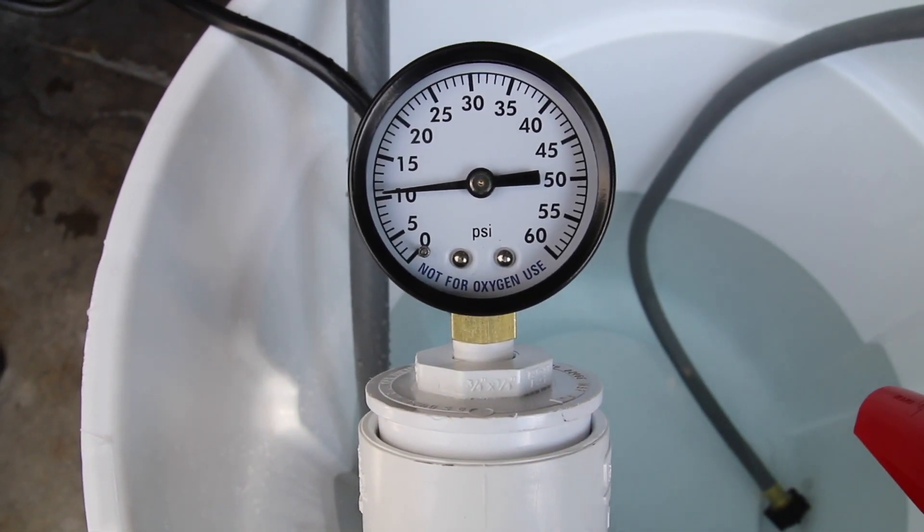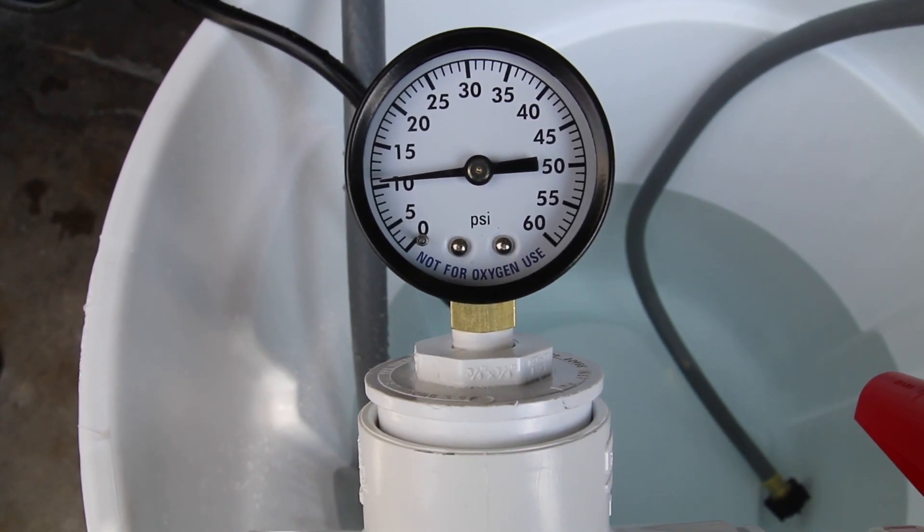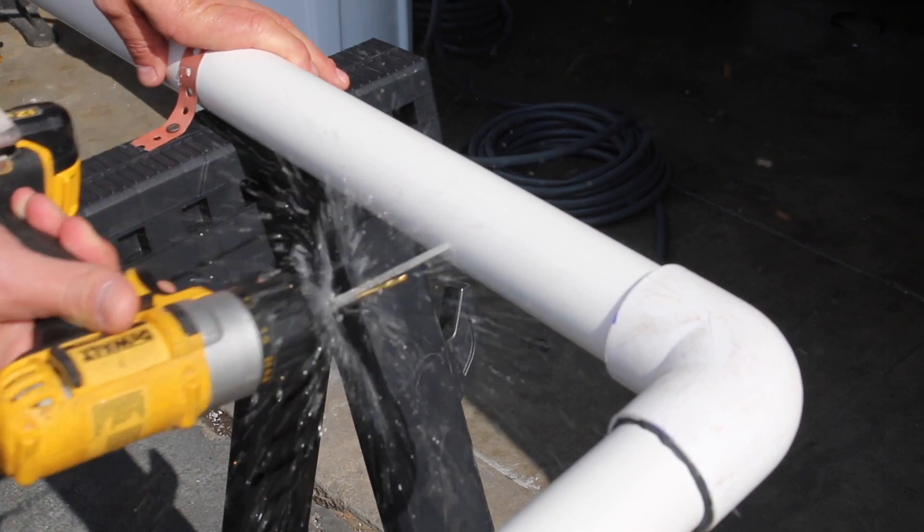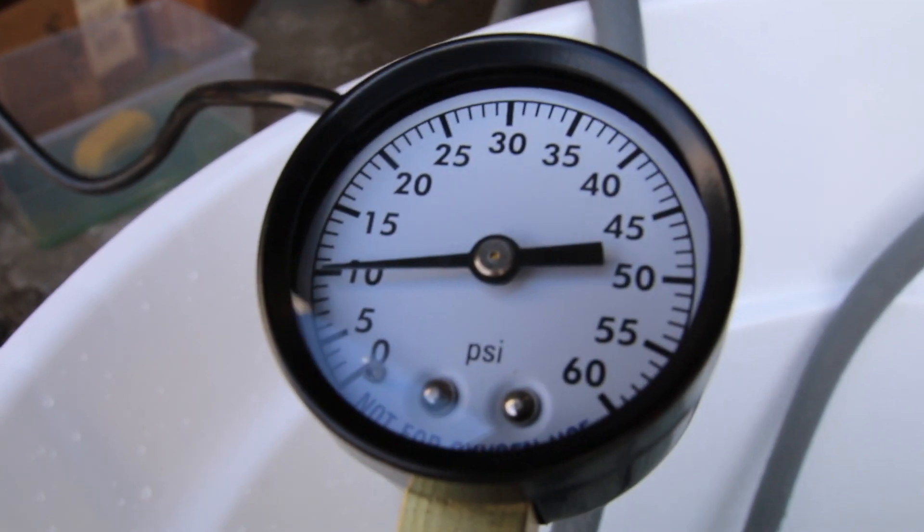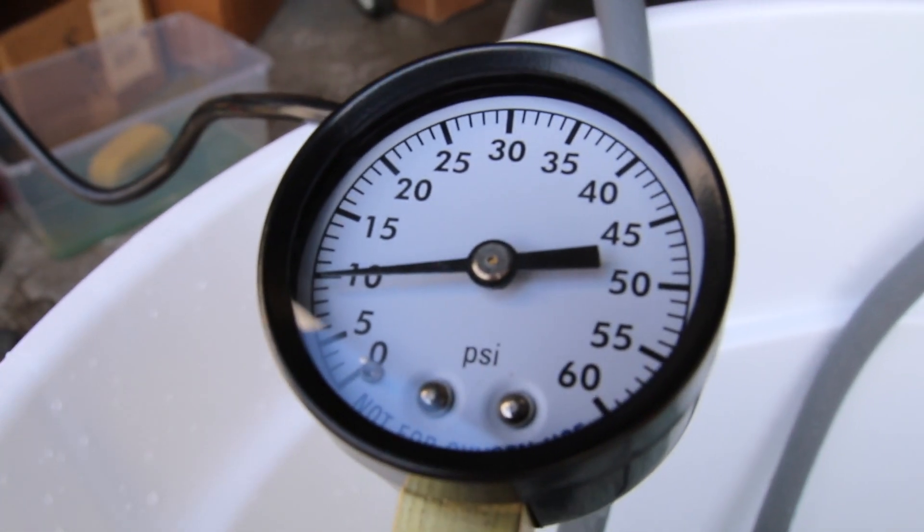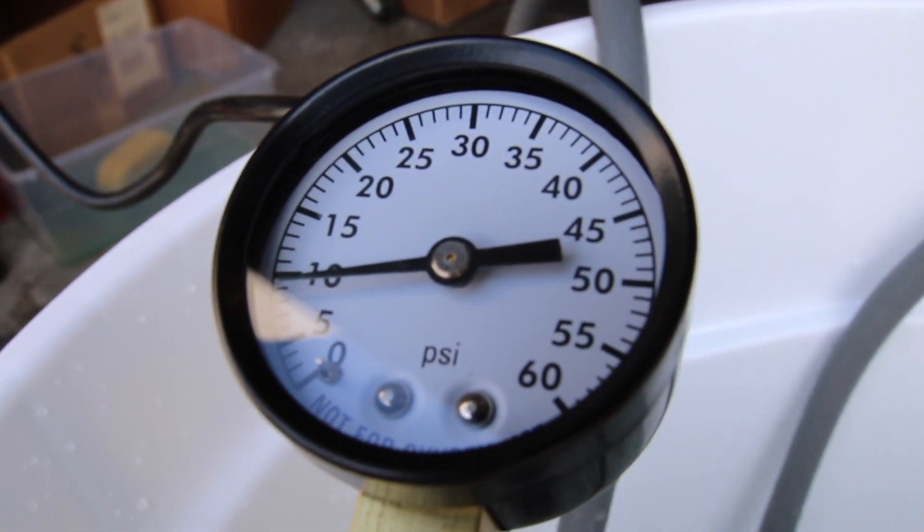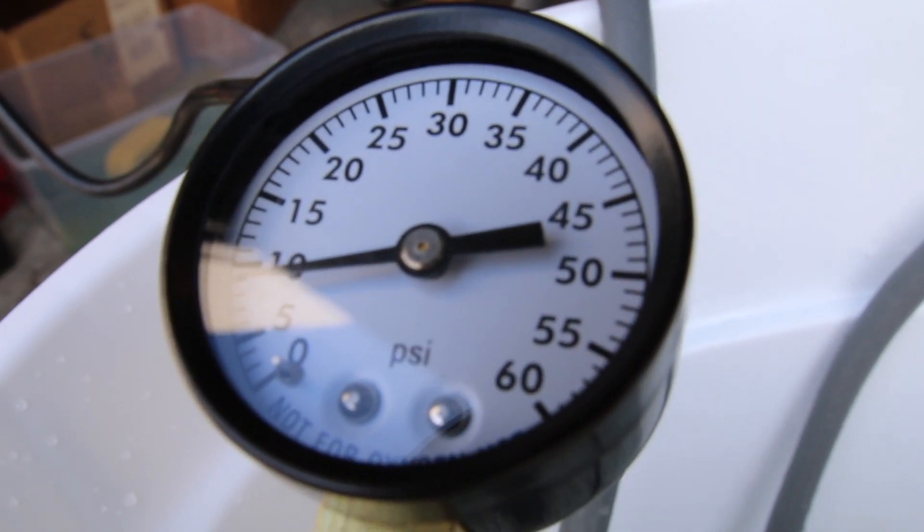What we're showing you here is the pipe is not leaking right now. It's set at about 11 pounds, and now we're going to create the leak. We drilled with a 1/8 inch hole, and now you can see the pressure drop. That's because the leak is happening.